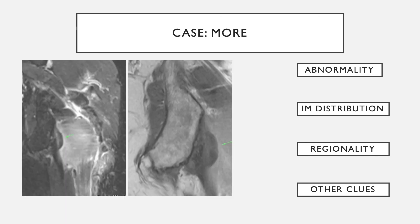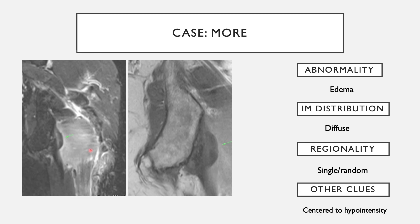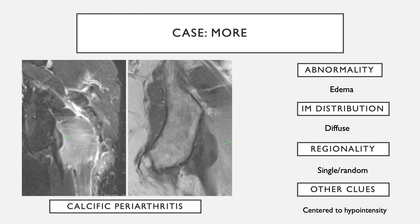In this case, there is diffuse muscle edema in the gluteal musculature involving a single muscle. Looking more carefully, everything seems to center on one particular area. When you see findings centering to one area, look carefully at that area. This ended up being an area of calcific periarthritis at the ischial tuberosity — this is an example of extensive muscle edema as a result of calcific periarthritis.